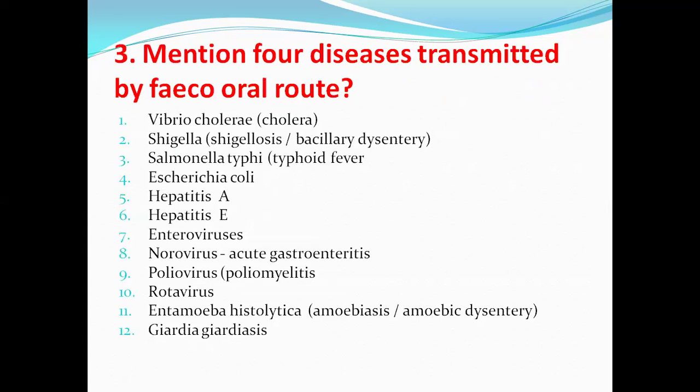Next question: mention diseases transmitted by the fecal-oral route. Fecal-oral route means if food or water gets contaminated with fecal matter, it leads to infections. Organisms transmitted by this route include: Vibrio cholerae causing cholera; Shigella causing shigellosis or bacillary dysentery; Salmonella typhi causing typhoid fever; Escherichia coli causing diarrhea; Hepatitis A, Hepatitis E, Enteroviruses, and Norovirus causing acute gastroenteritis; Poliovirus causing poliomyelitis; Rotavirus causing rotaviral diarrhea; Entamoeba histolytica causing amoebiasis or amoebic dysentery; and Giardia species causing giardiasis.